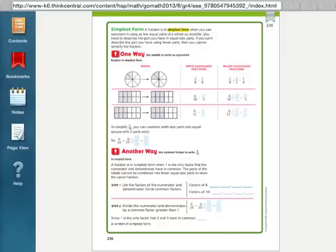So, we are going to take what we learned about writing, generating, and writing equivalent fractions, and change that to simplest form. So, I just want to read the definition here for you of simplest form. It says, a fraction is in simplest form when you can represent it using as few equal parts of a whole as possible. You need to describe the part that you have in equal size parts. If you can't describe the part that you have using fewer parts, then you cannot simplify the fraction.